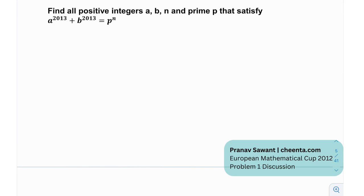The goal is to find all positive integers A, B, N and prime P that satisfy this particular equation. Here we have a 2013 power on both sides, and the objective would be to reduce this power. I don't really like 2013 — maybe I can reduce it to something simpler.